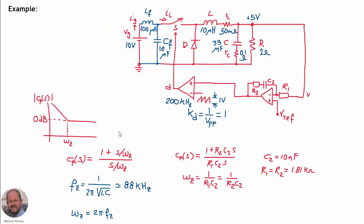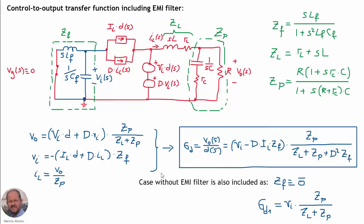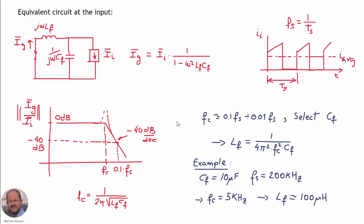Let's do a quick review of what we have seen in previous videos. We studied this buck converter as an example, including the EMI filter with values for the inductor and capacitor. We operated the converter in closed loop with a PI compensator and a PWM modulator, and calculated the control-to-output transfer function including the EMI filter using the average circuit of the converter operating in continuous conduction mode.